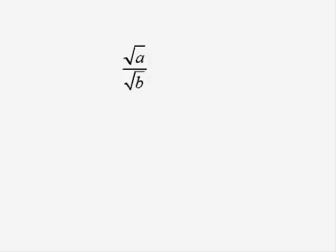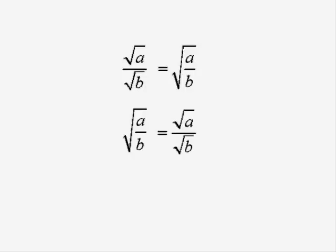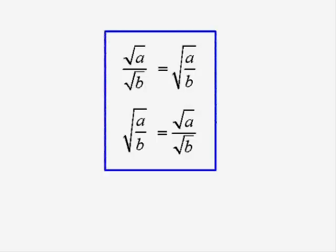In general, the rule is that if you've got root A divided by root B, you can write them both in the same square root sign. And you can do it the other way. Sometimes you'll have root A over B, which you'll want to split into two surds, top and bottom. Now both those way round are rules which you should remember.